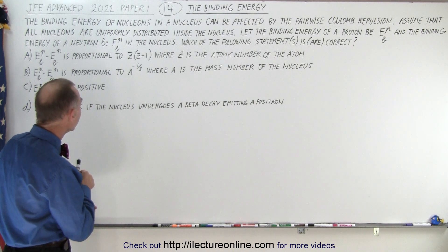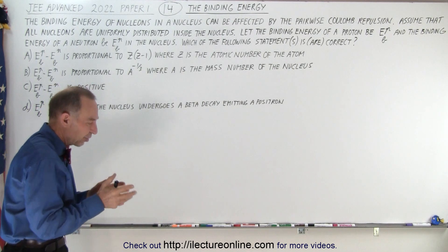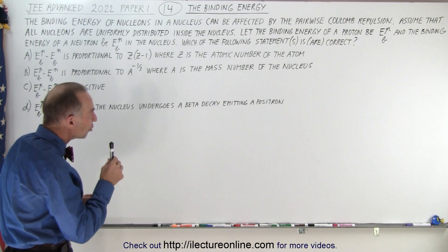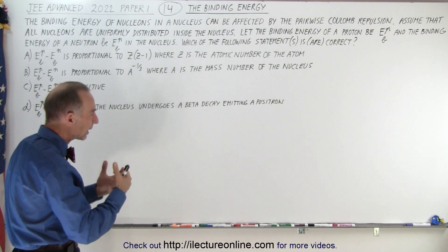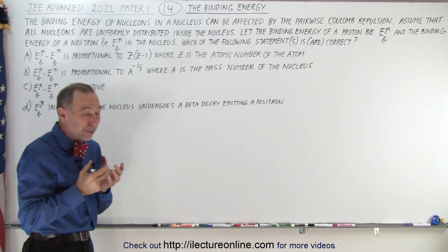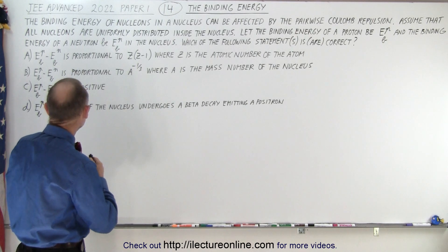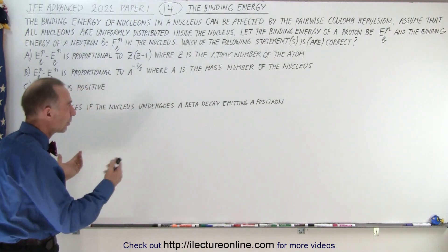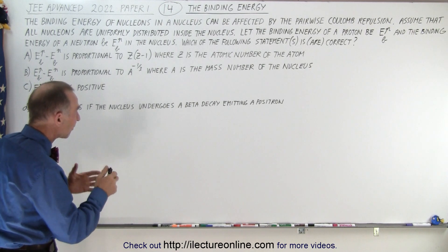Assume that all nucleons are uniformly distributed inside the nucleus. So if you have a big nucleus with protons and neutrons, they're kind of uniformly distributed — not a lot of protons on one side and neutrons on the other; they're just evenly mixed. Then they say let the binding energy of a proton be E sub BP and the binding energy of a neutron be E sub BN. So we're talking about the average binding energy of a neutron and the average binding energy of a proton.